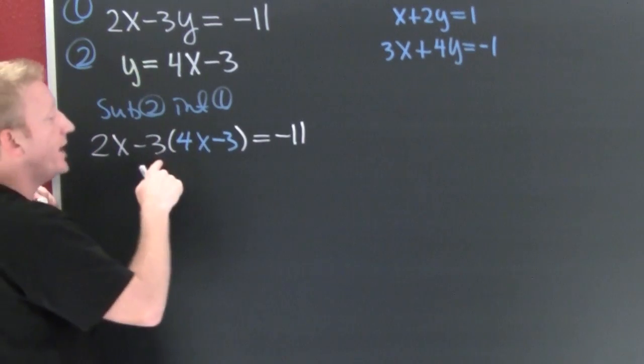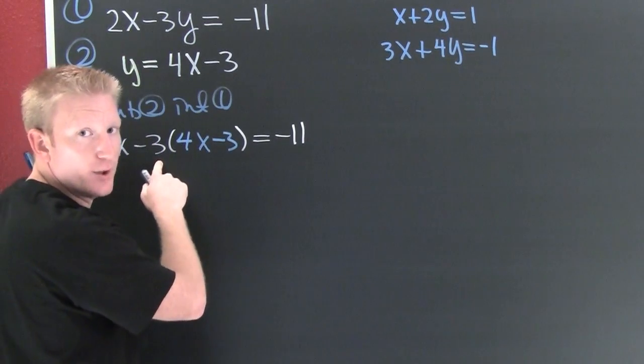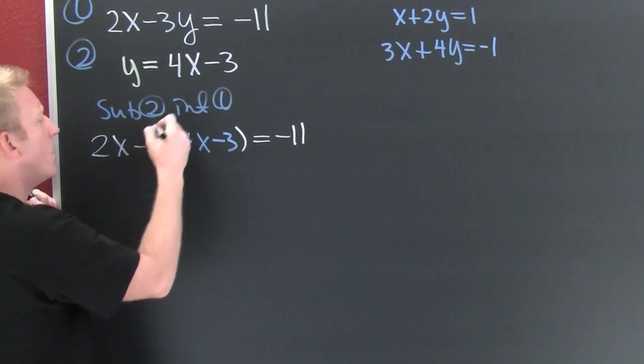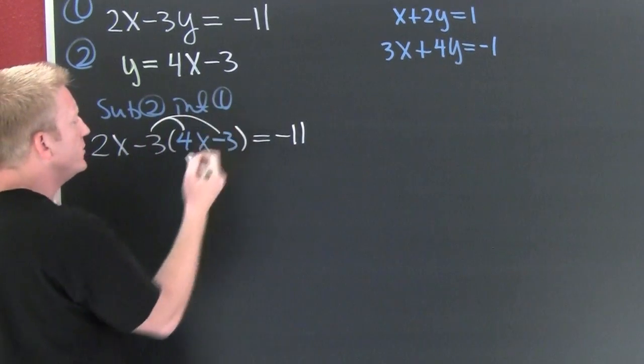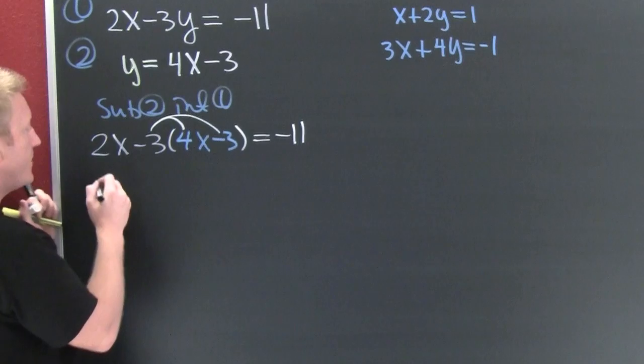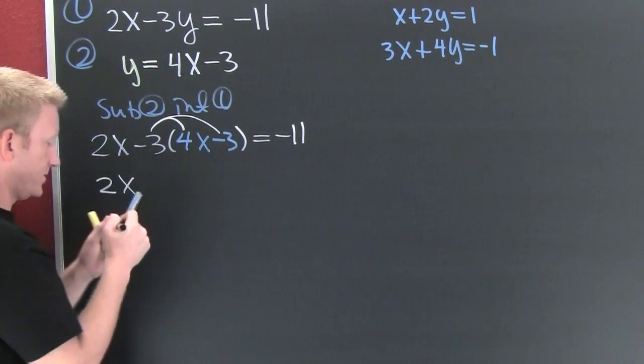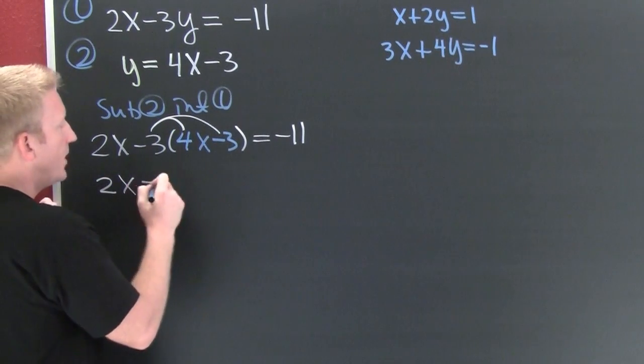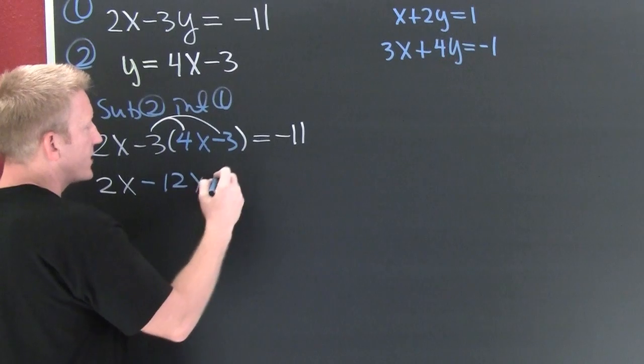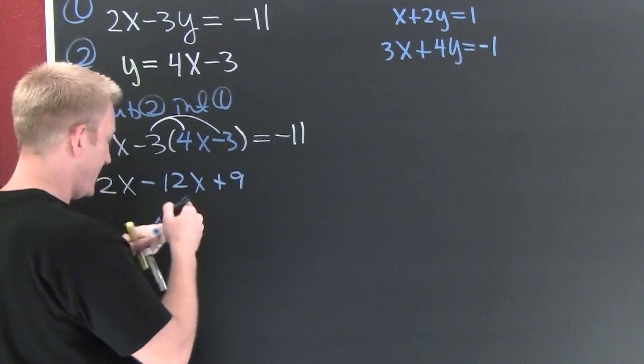And then that's gonna be equal to minus 11. What did I do? I turned a two by two into a one by one, one equation with one unknown. So I'm gonna keep on keeping on and going to go and I am gonna have 2x minus 12x plus 9.